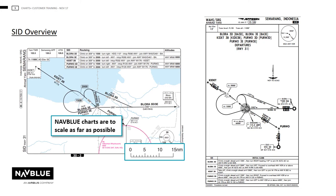NAVBLU will draw their charts to scale as far as possible. For areas where the scale is distorted, geographical background information will be removed, leaving a white space as shown in the top left-hand corner of the NAVBLU chart. If the whole chart is not to scale, a text box after aerodrome elevation will be inserted with the words 'chart not to scale'.